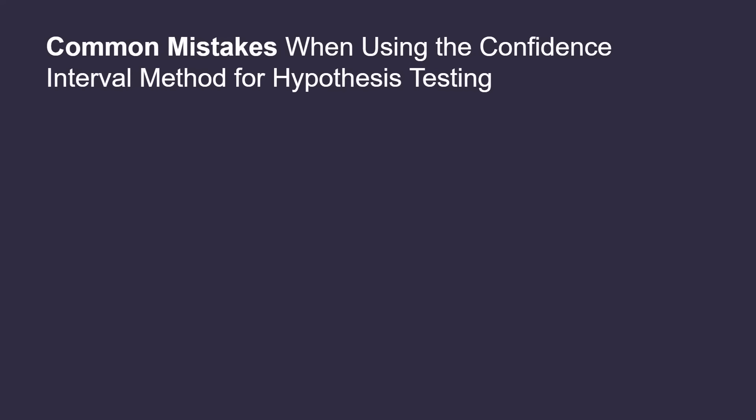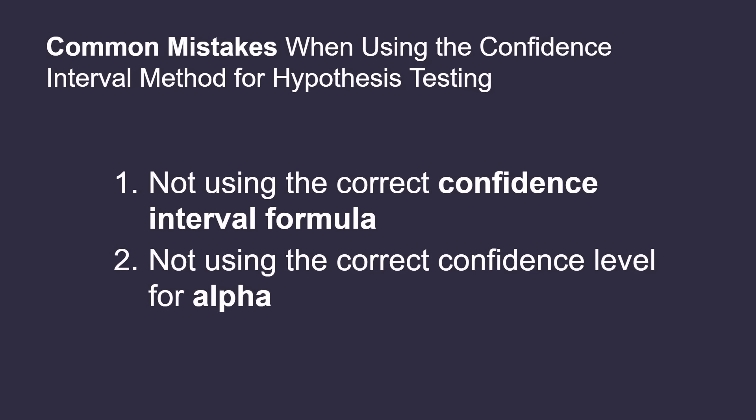Despite the fact that the relationship between significance tests and confidence intervals is a fairly straightforward concept, there are a few mistakes that one should avoid. Always ensure that the correct confidence interval formula is being used for the hypothesis test. In our example, we used the confidence interval formula for the mean when sigma is known. However, one may make the mistake of using the formula for the population mean when sigma is unknown because they missed the part of the problem that specifies that sigma is known. Additionally, the relationship between alpha and the confidence level must be correct — for example, use a 99% confidence interval when the alpha level is 0.01 in the hypothesis test. These mistakes can be avoided by reviewing the formulas used for creating confidence intervals, and it is also a good habit to always review the value of alpha before constructing the confidence interval to ensure the correct confidence level is used.